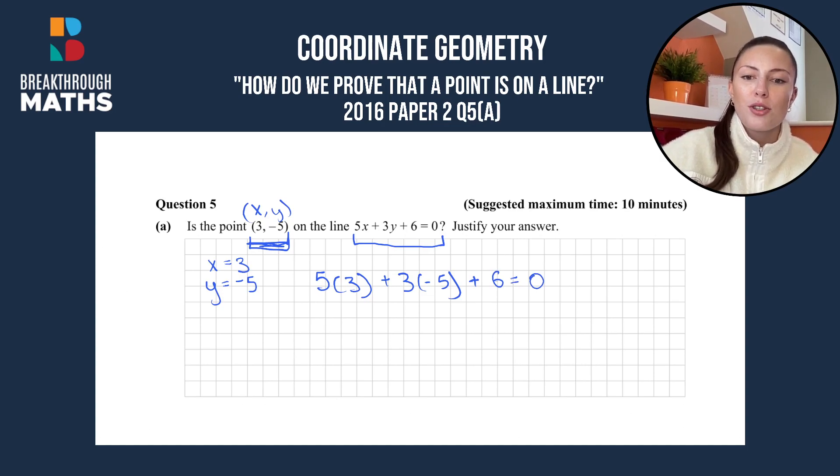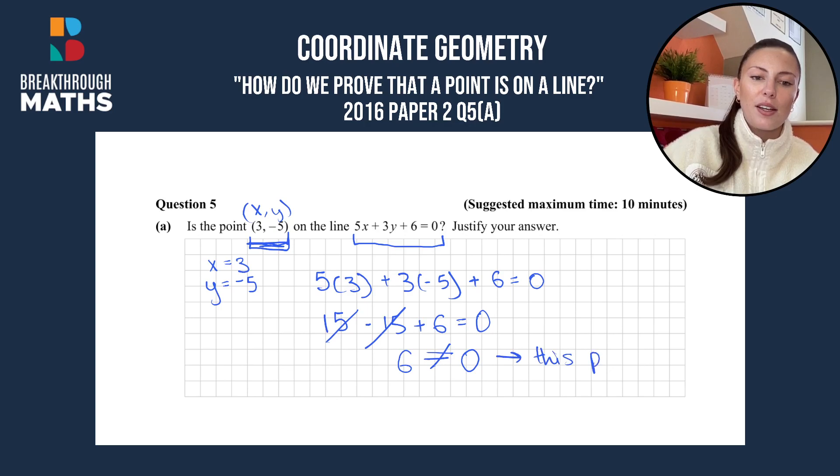So 5 times 3 is going to be 15. 3 times -5 is going to be -15. And then we have plus 6 is equal to 0. So 15 minus 15 cancels out to 0. So we're left with 6 which is not equal to 0. So this means that this point is not on the line.